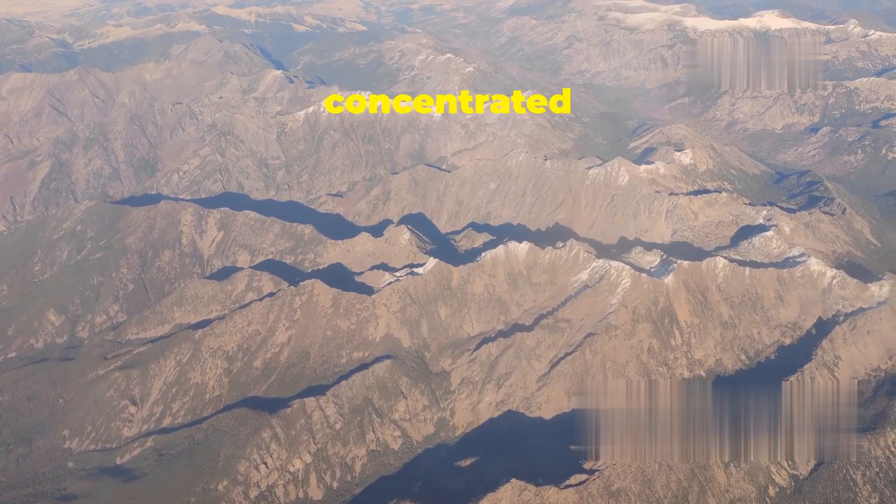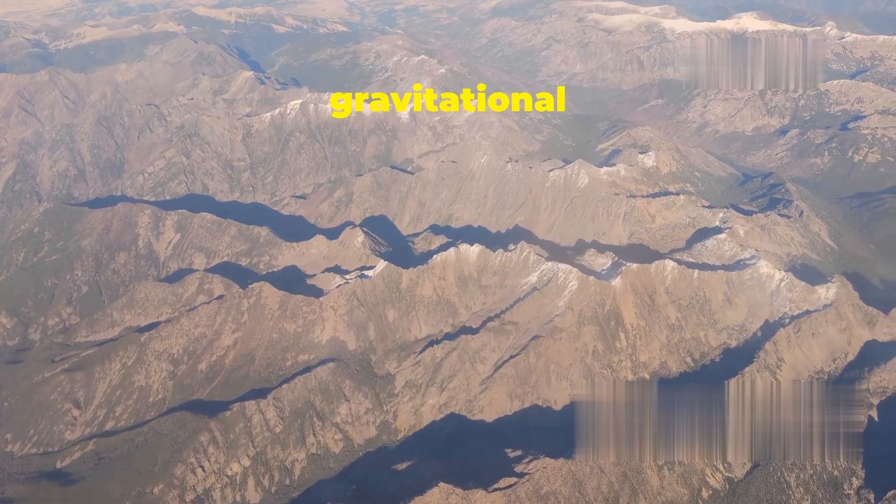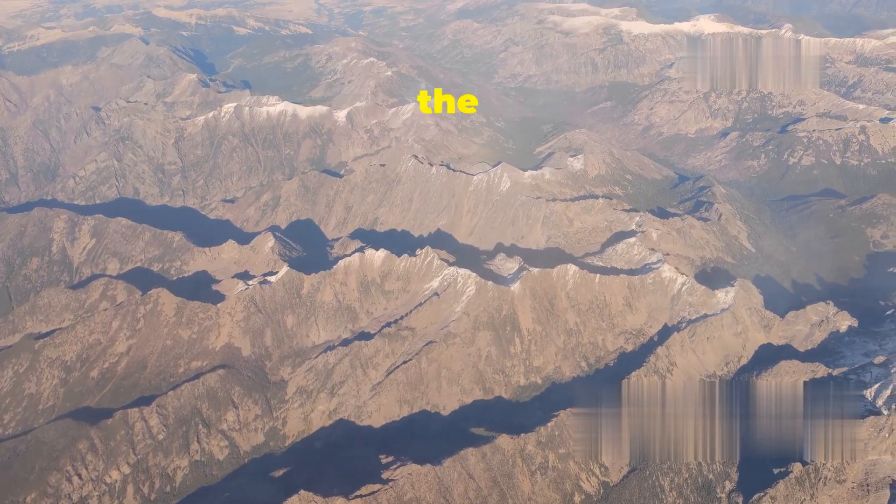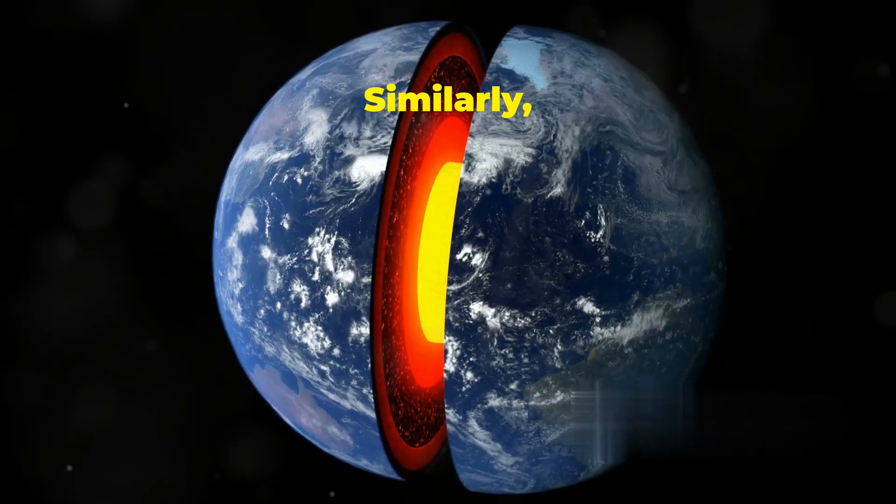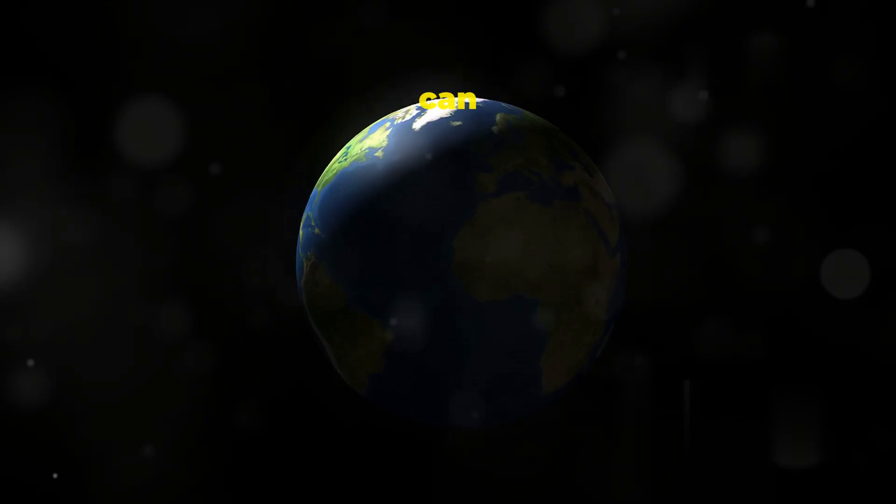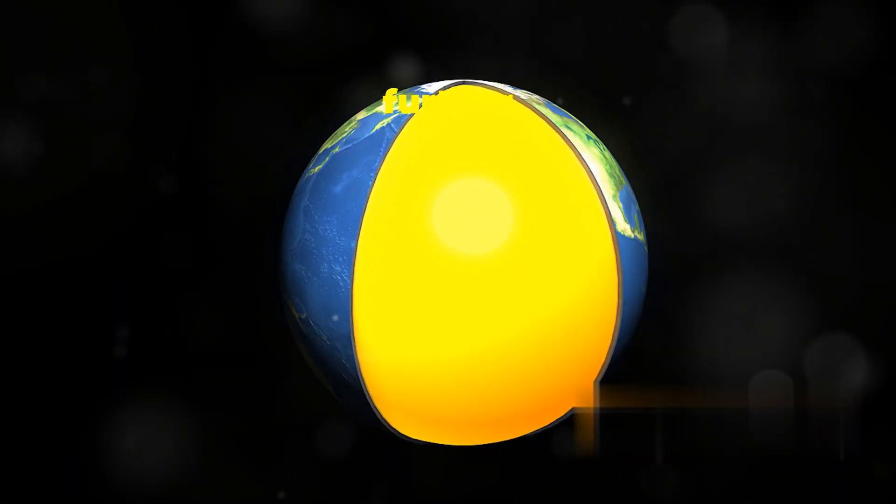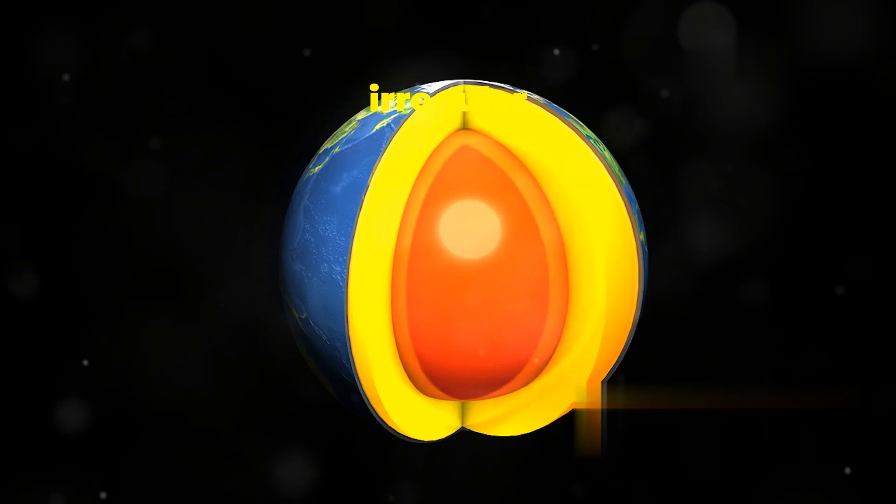Mountain ranges with their concentrated mass exert a stronger gravitational pull than surrounding lowlands, subtly distorting the surrounding crust. Similarly, variations in density within Earth's interior can create regional anomalies in the gravitational field, further contributing to the planet's irregular shape.